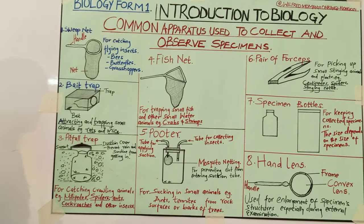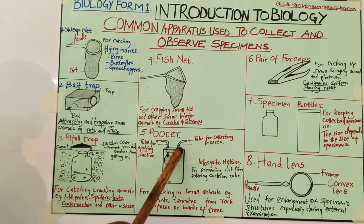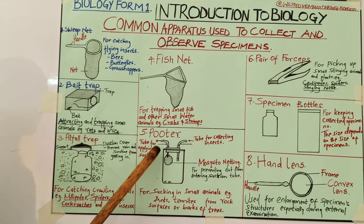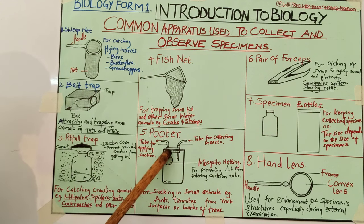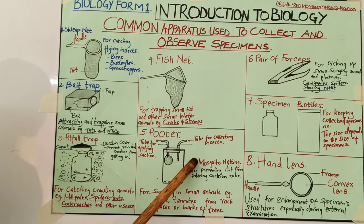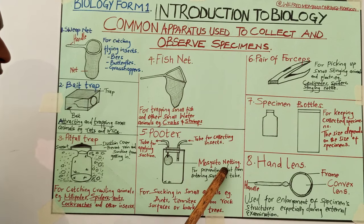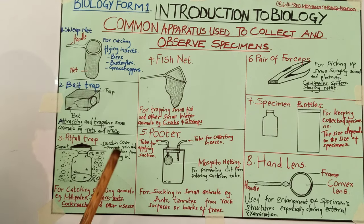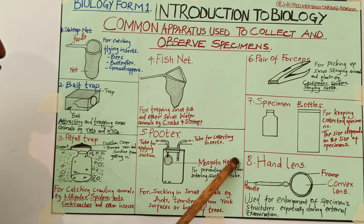When you want to collect them, you use a pooter. Let us look at the parts of a pooter. A pooter has two tubes. The first tube is for collecting the insects — the collection tube on the right-hand side. The second tube is for application of suction. Inside the container of the pooter, there is what you call the mosquito netting. The function of the mosquito netting is to prevent dust from entering the suction tube.